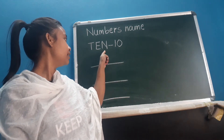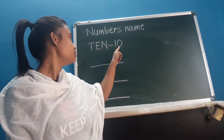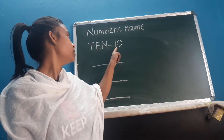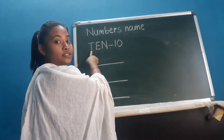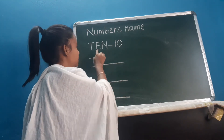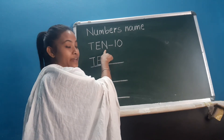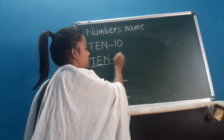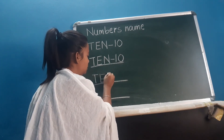Ten: T-E-N. I'll show you how you have to write it. You have to write over this blank space, okay — starting with the letter T, then E, and then N. This is called ten: T-E-N.